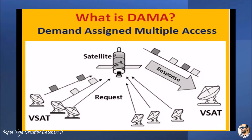All the signals we use nowadays are wireless — phone conversations, DTH TV signaling systems, or any kind of signaling system. Whenever you go for a wireless communication system, there is a presence of a satellite. Earth stations communicate with the satellite. Coming to this topic, DAMA — Demand Assigned Multiple Access — means multiple access can be assigned based on demand. The demand comes from users: mobile communications, TV communication systems, or any communication system.